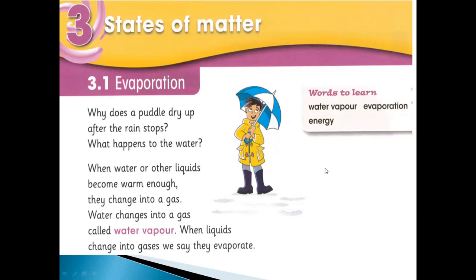When you put water on a stove, it boils and then the water turns to vapor — the water changes into a gas. This gas is called water vapor. When liquids change into gases, we say they evaporate.